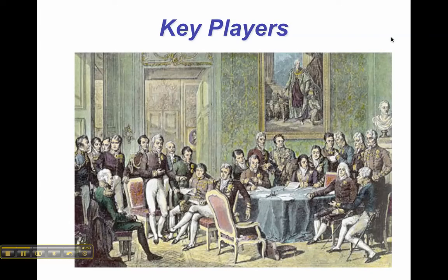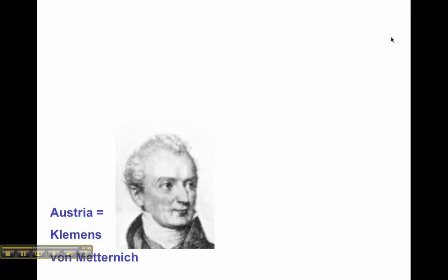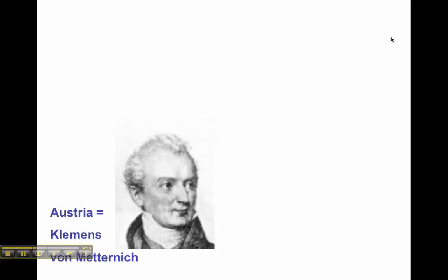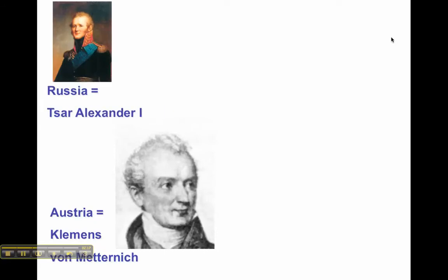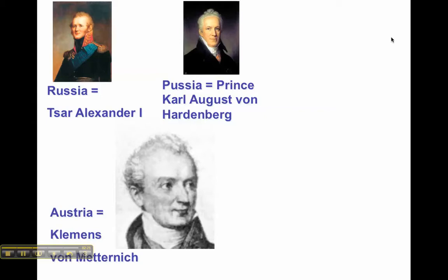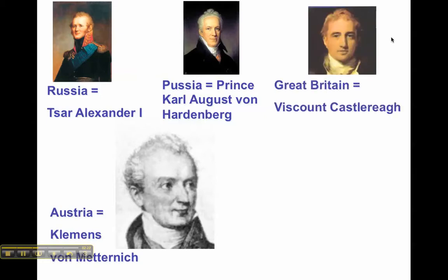There were several key players who took the lead. There were certainly royal families and ministers of government that got together to determine the direction of the new order. It should come as no surprise that the Prime Minister of Austria, Clemens von Metternich — because Vienna is in Austria and that's where this meeting was taking place — was one of the key players. Representatives from Russia, Prussia, Great Britain, and Austria, that original alliance that defeated France, were also key players.